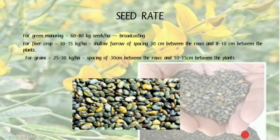Seed Rate: For green manuring, 60–80 kg seeds per hectare are used for broadcasting. For fiber crop, 30–35 kg per hectare with shallow furrows, spacing of 30 cm between rows and 8–10 cm between plants. For grain, 25–30 kg per hectare with spacing of 30 cm between rows and 10–15 cm between plants.